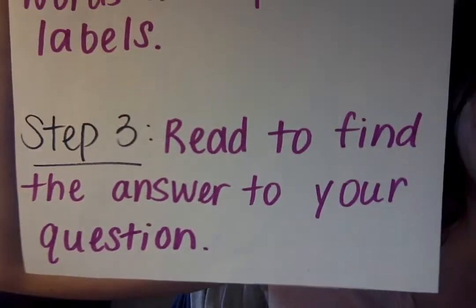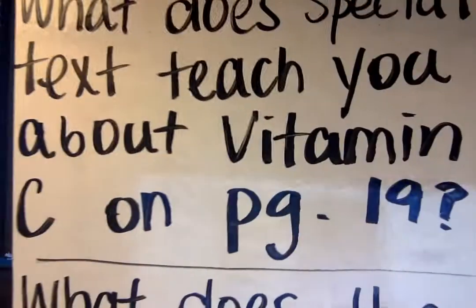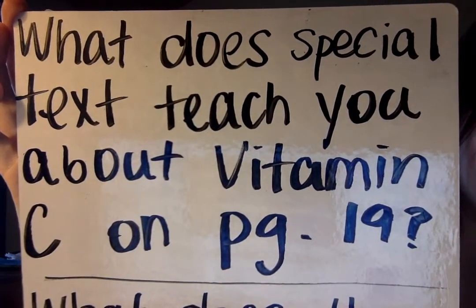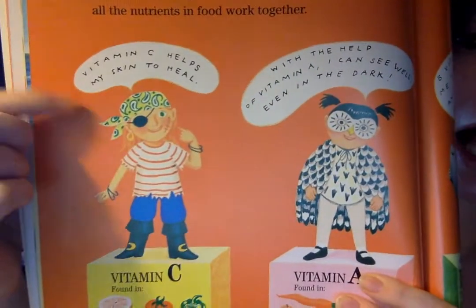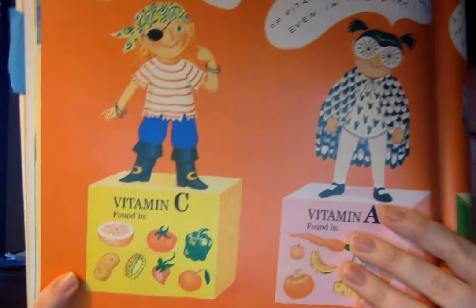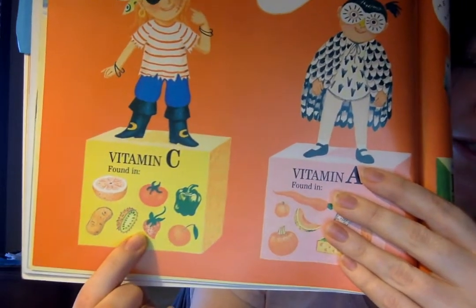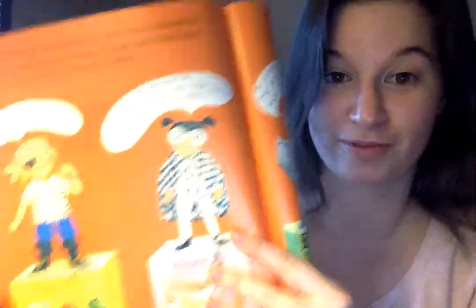Going into step three: read to find the answer to your question. Looking back at our question — what does the special text teach you about vitamin C on page 19? — what the special text teaches me is: one, that vitamin C helps my skin to heal, and two, that vitamin C is found in foods like tomatoes, oranges, peppers, strawberries, and other foods like that. That's how I was able to look at my special text to help me answer my question.